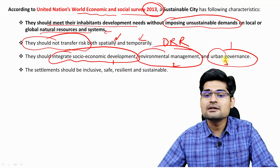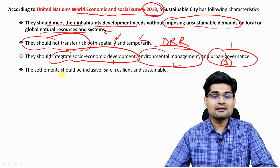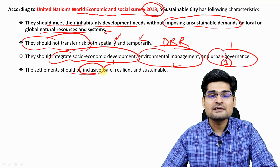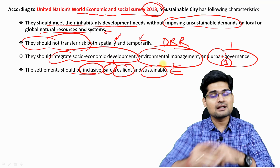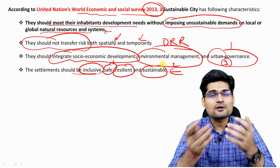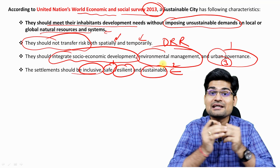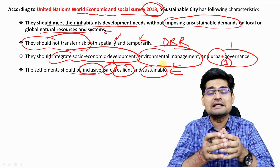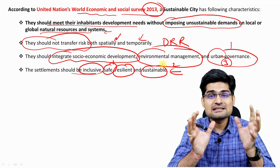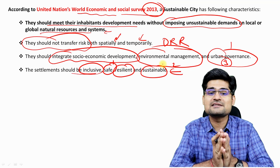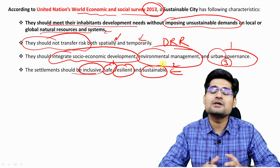These are the three pillars of a sustainable city. Settlements should be inclusive, safe, resilient, and sustainable — as we discussed in the last lecture on future cities, these are the main characteristics we talk about when we say sustainable city or sustainable urban development.